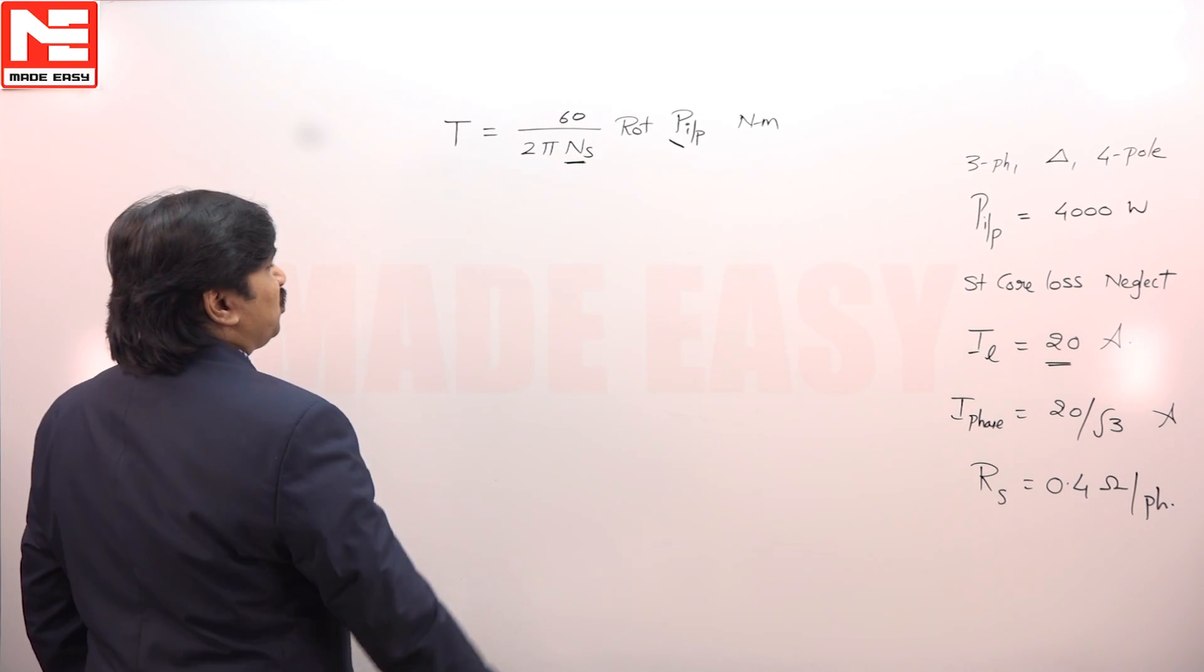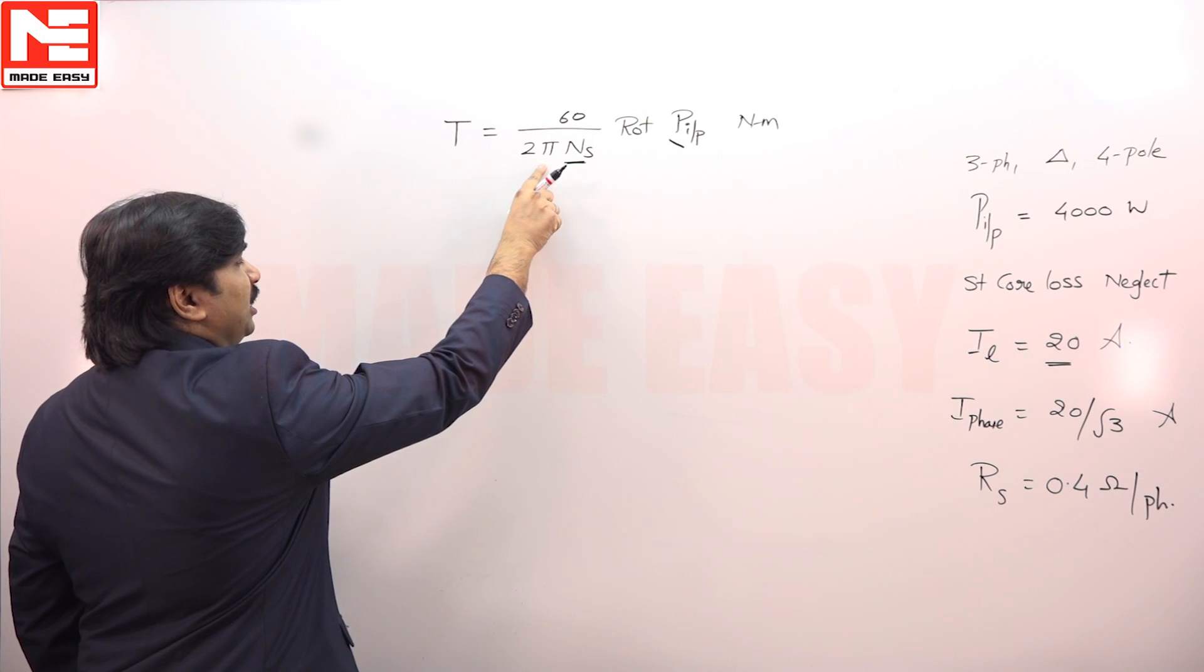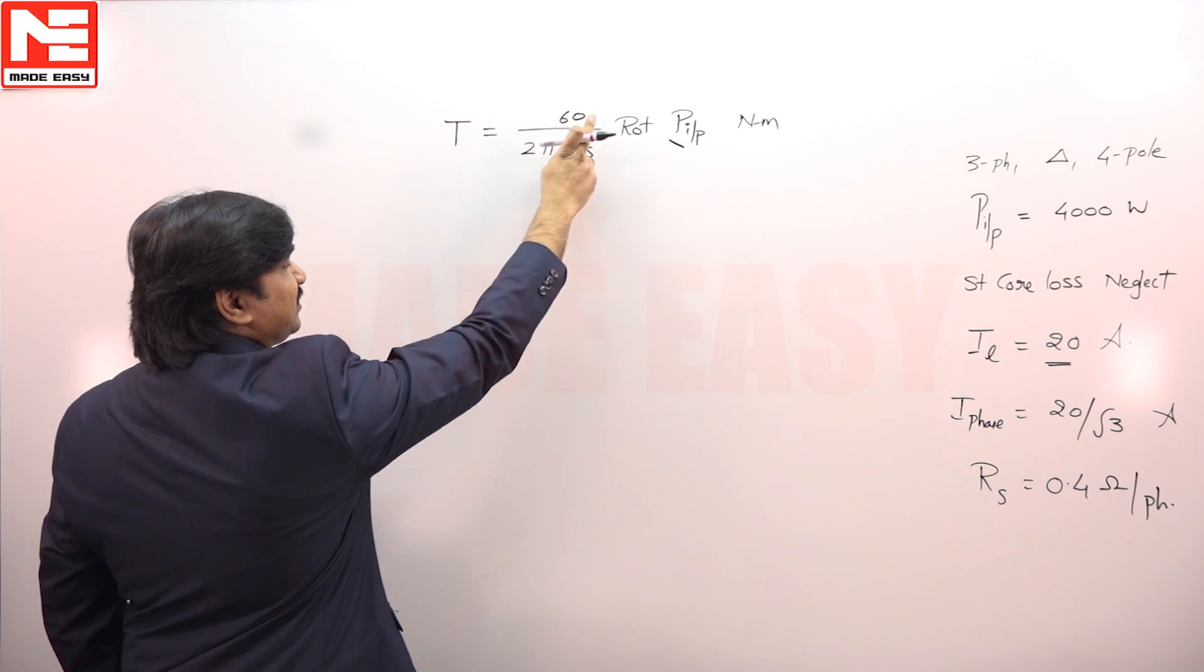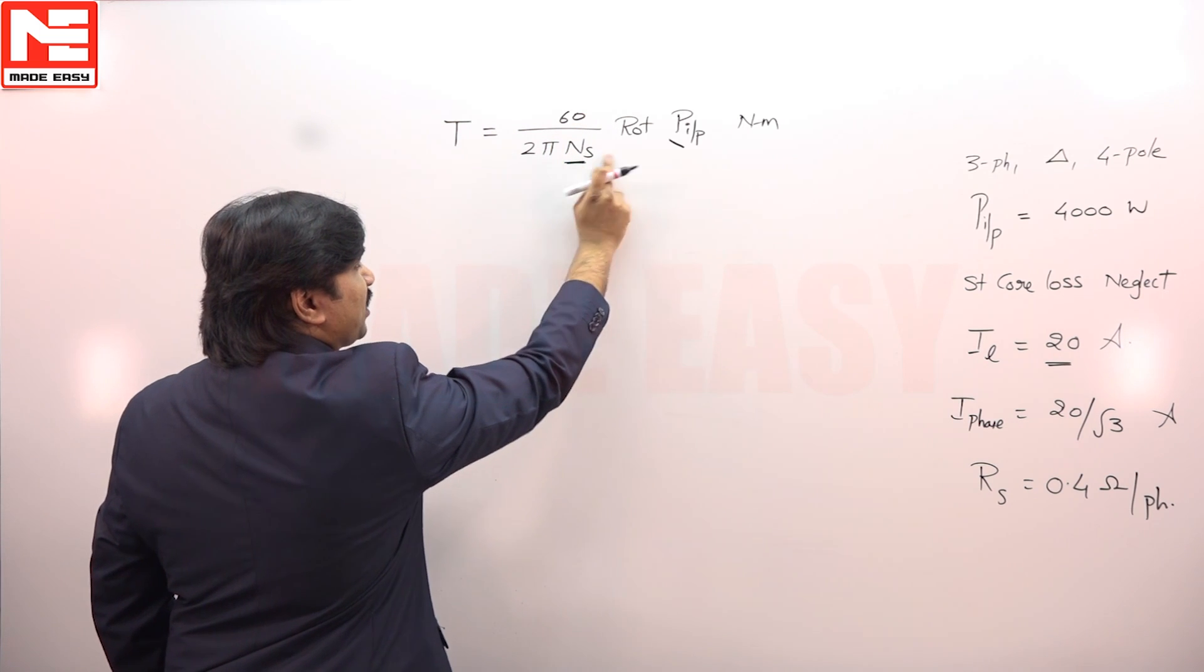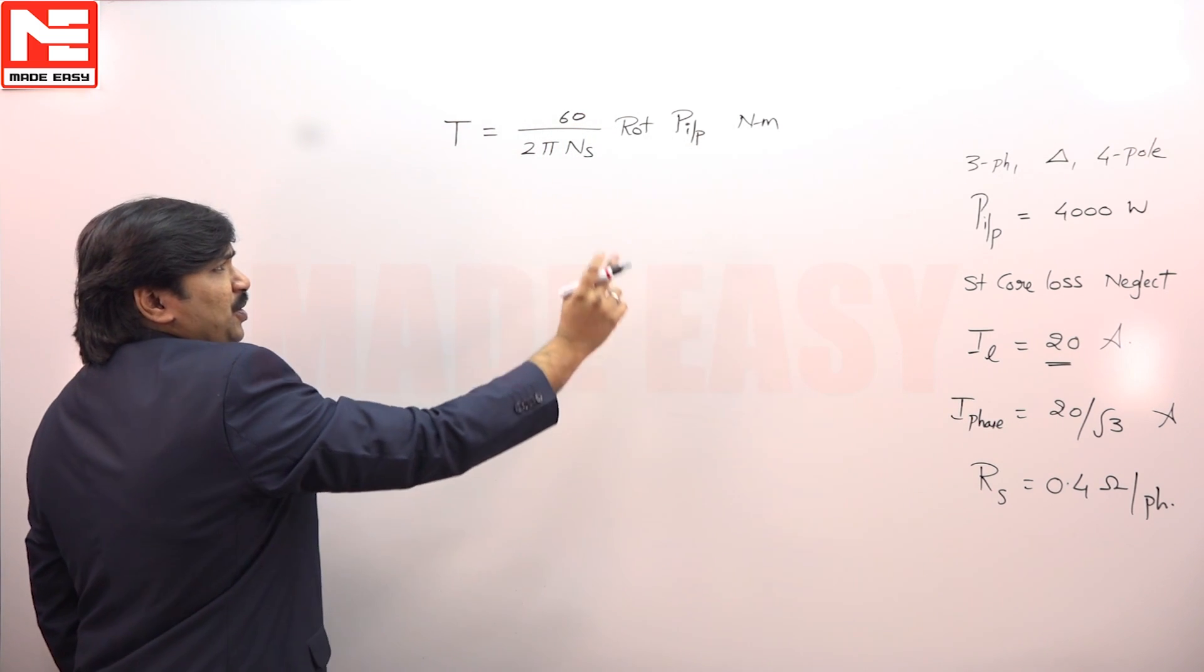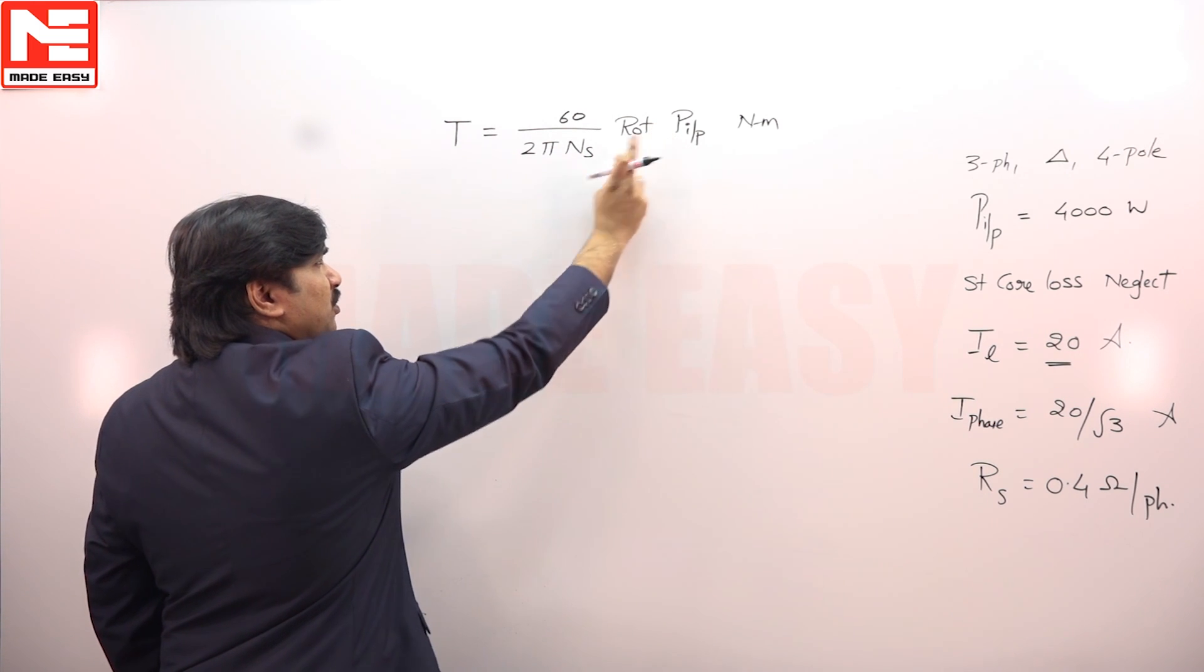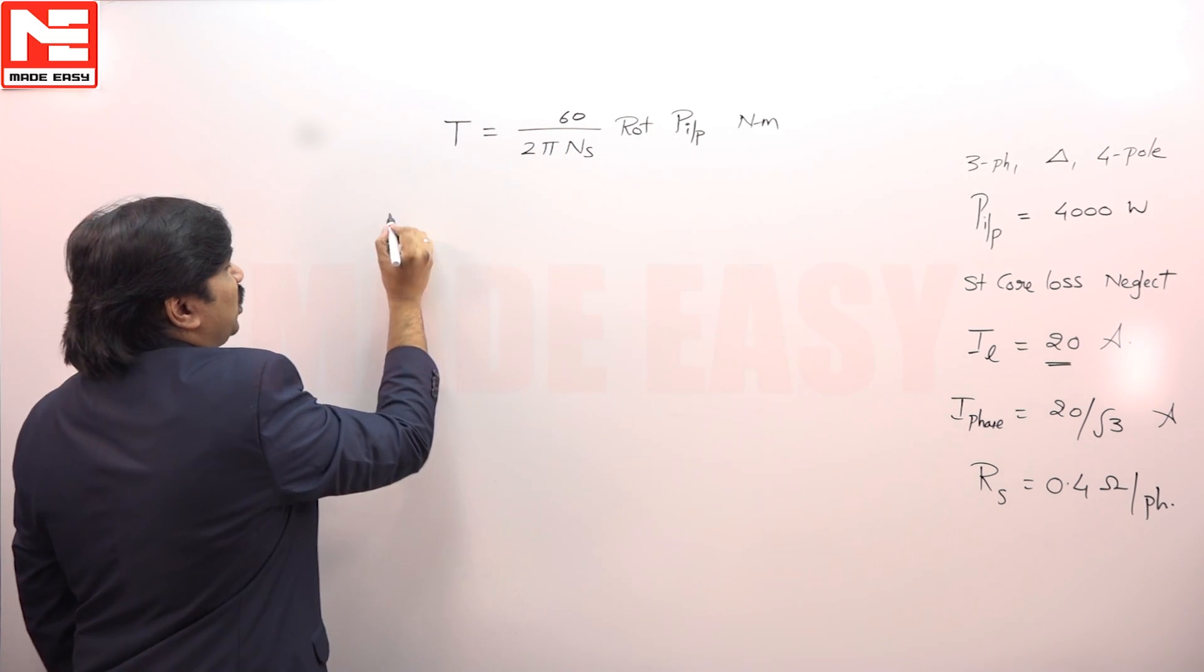This question is asked about internal torque developed in the motor. The torque developed in the motor can be expressed as 60 by 2πNs into rotor power input. When you put rotor power input, you have to put Ns. What is rotor power input?